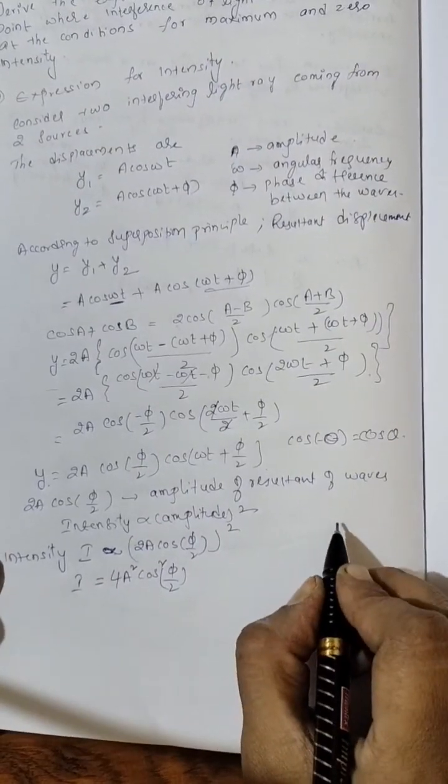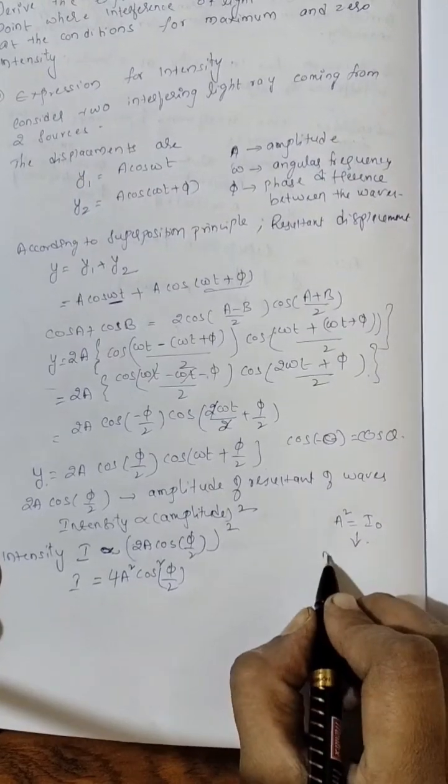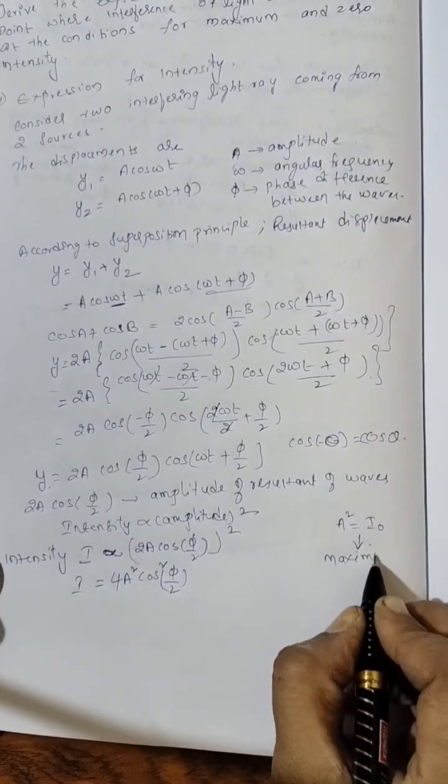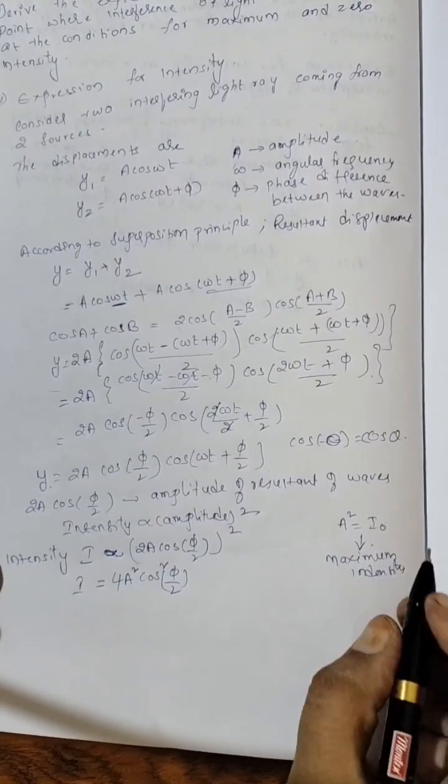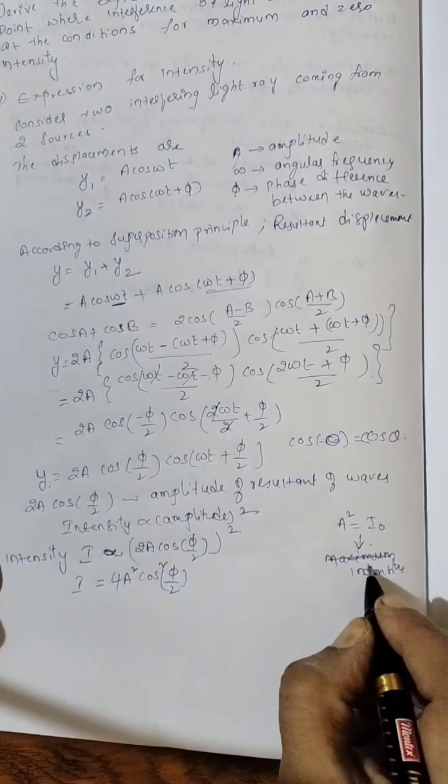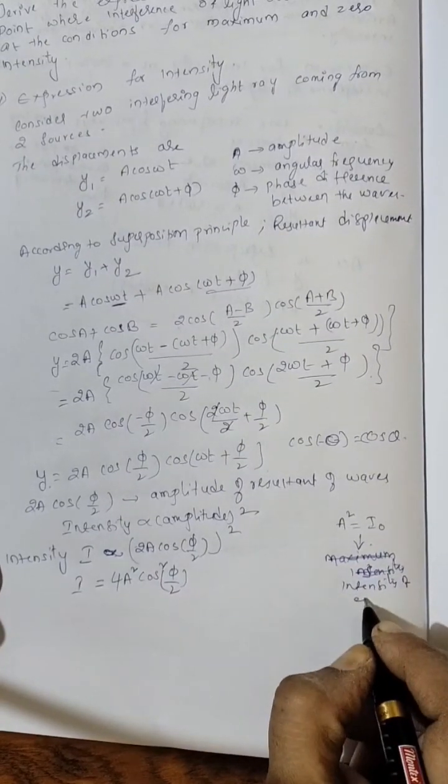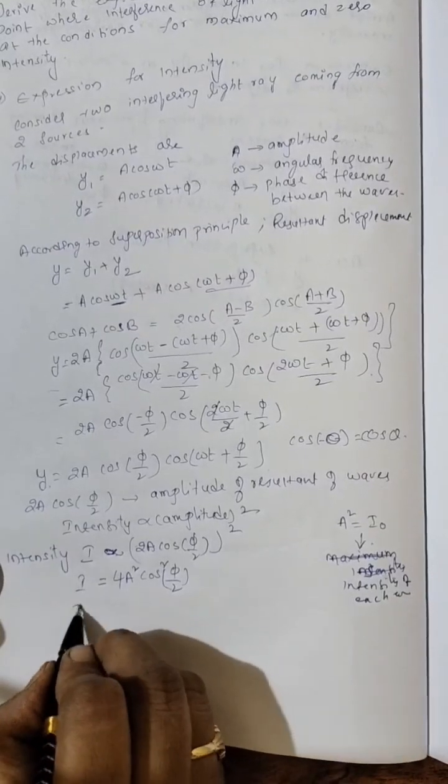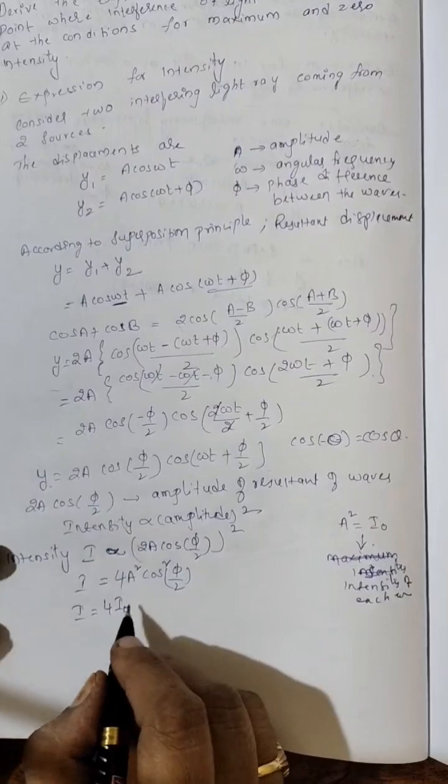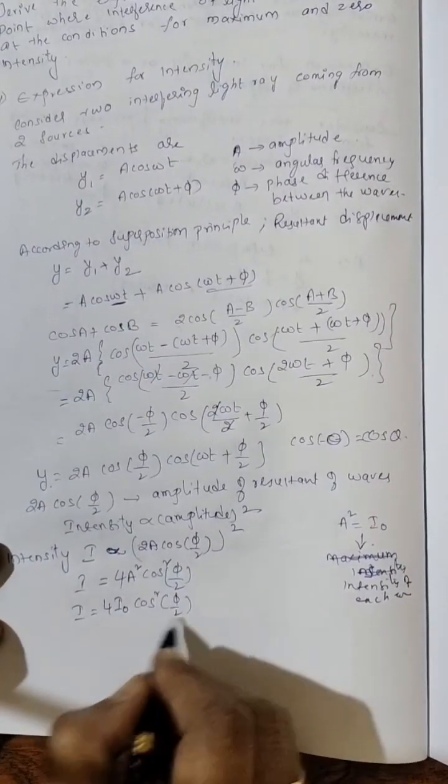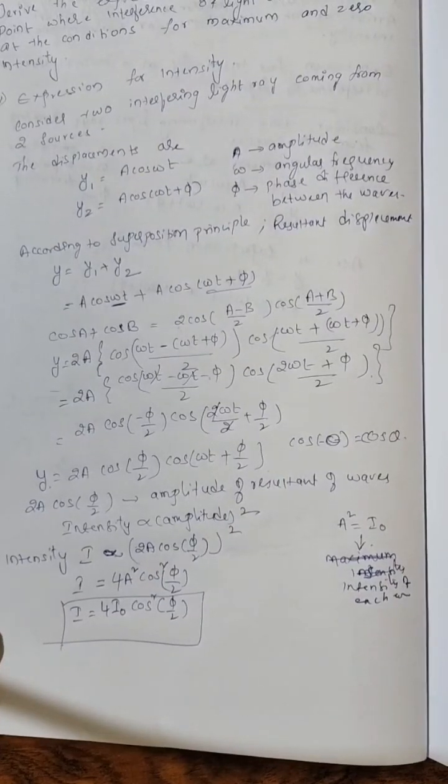Or I equal to 2 square, 4 A square cos square phi by 2. Now here A square we can write as I naught, which is the maximum intensity or intensity of each wave. So this is the required equation for the intensity.